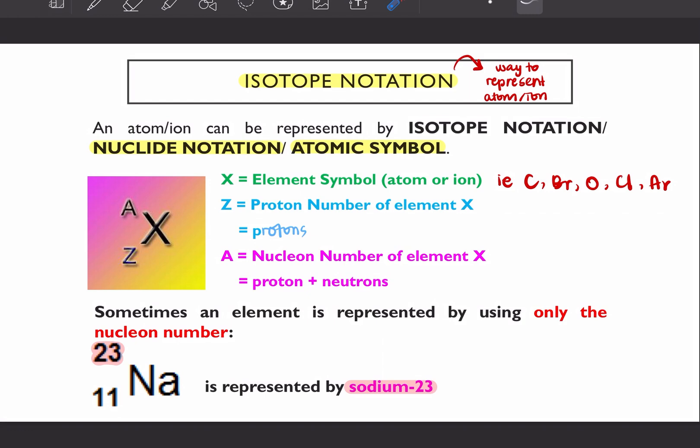Contohnya macam elemen tu, awak boleh jumpa dekat periodic table. Macam carbon, bromine, oxygen, chlorine, argon. Ini adalah elemen symbol.